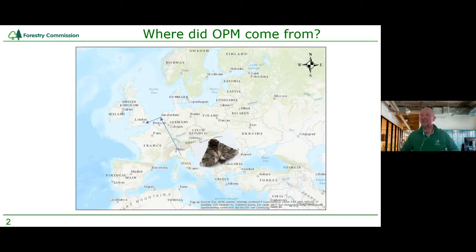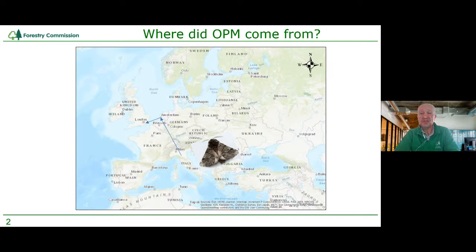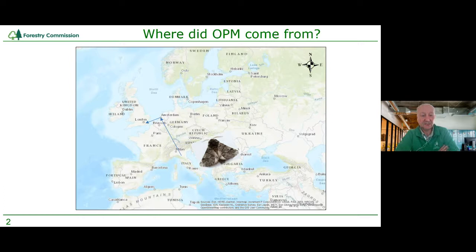So where did oak processionary moth come from? It was first seen in 2006 in the southwest London area, on trees imported for a housing development — the trees were planted in 2005. It came from a supplying nursery in the Netherlands, which was itself supplied by trees from Italy. This shows how plant trade has been very instrumental in getting OPM into this country. I'll be calling it OPM from now on.